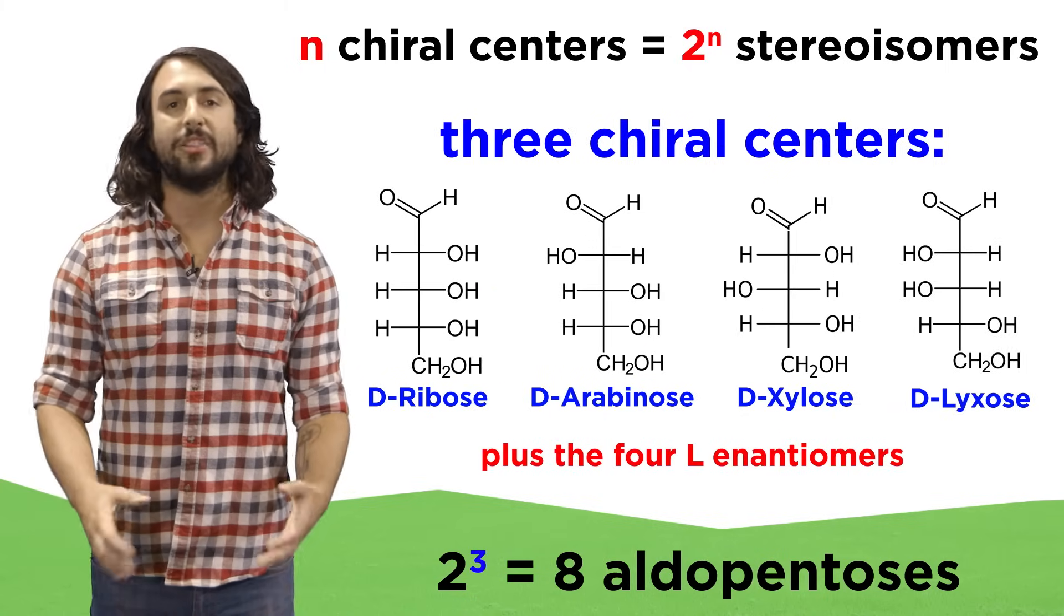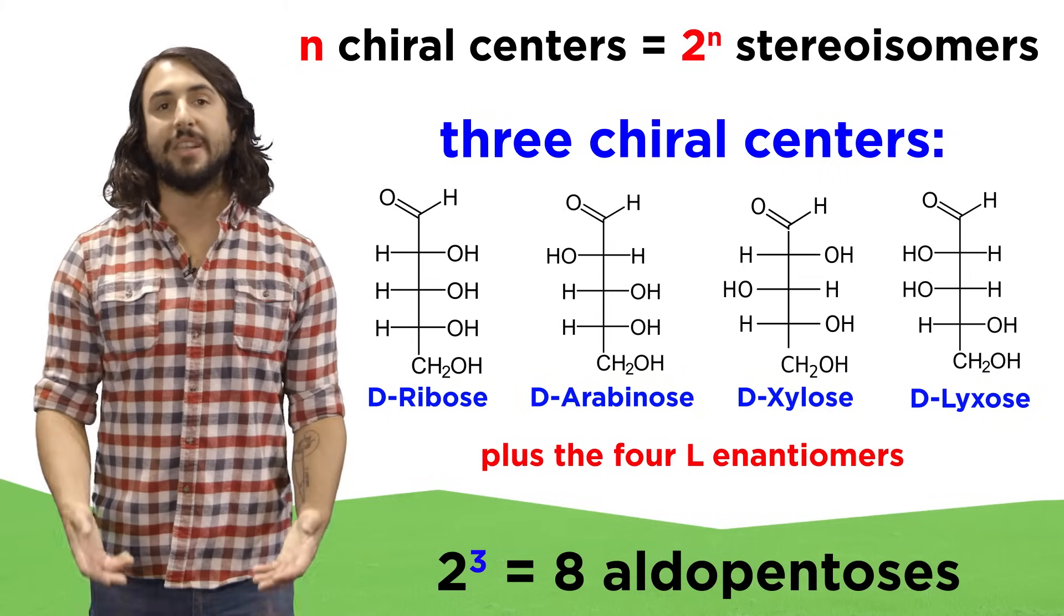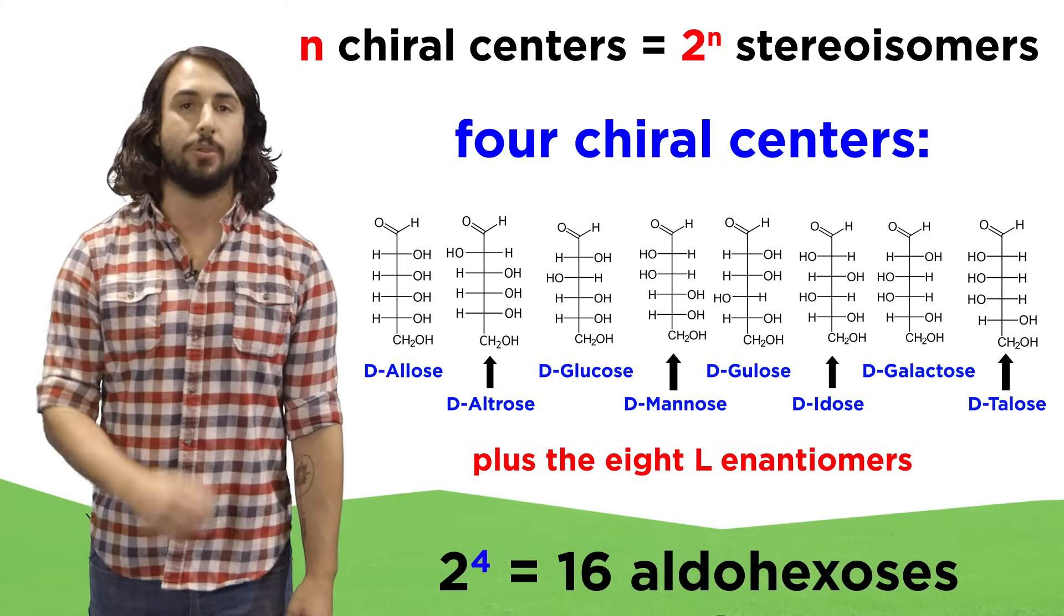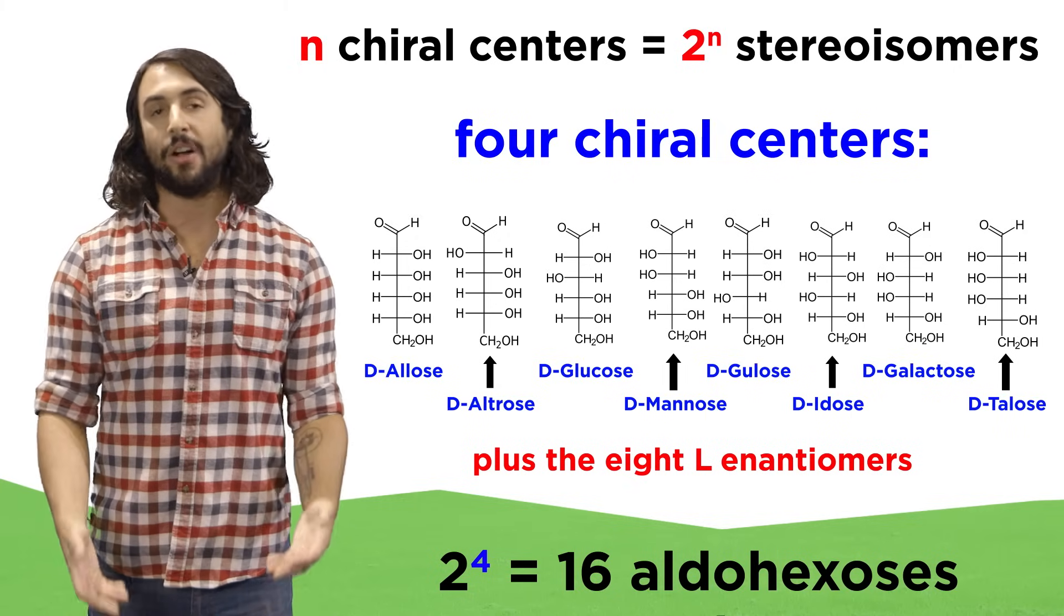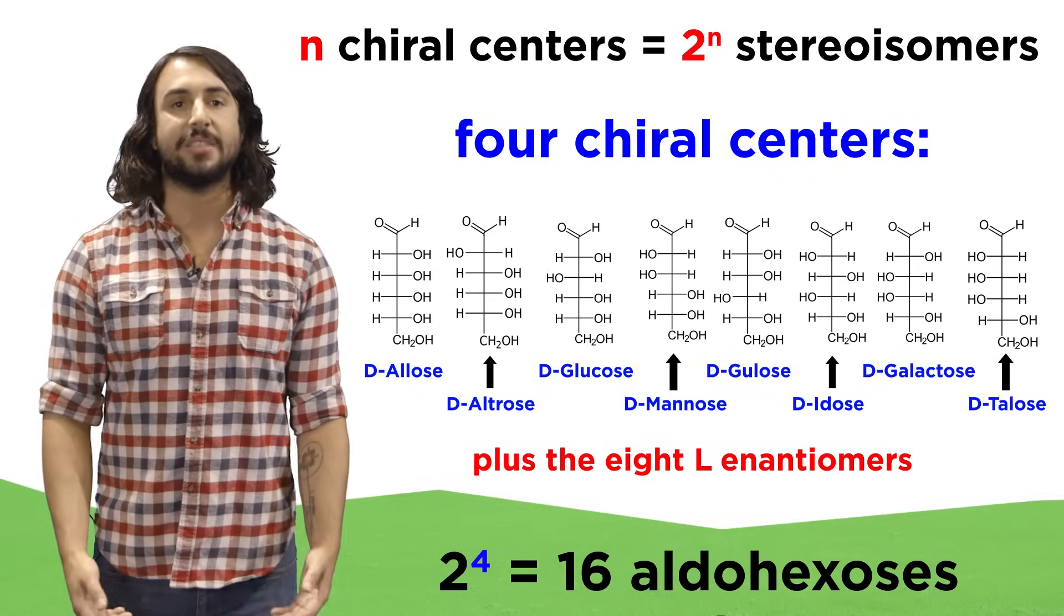there are eight aldopentoses, these four and their L enantiomers because of the three stereocenters, and a total of sixteen aldohexoses, these eight and their L enantiomers. These differ only in the stereochemistry of these chiral centers.